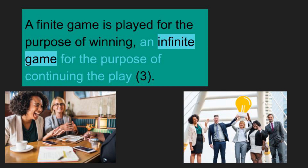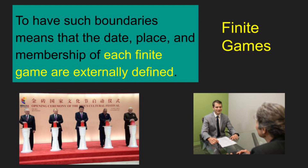Carse goes over several things that make finite and infinite games different. The first is that finite games always have what he calls boundaries. To have such boundaries means that the date, place, and membership of each finite game are externally defined. When you play a sport or a game where the purpose is to win, the rules are already set up in advance. You can change the rules before you play, but you really can't change them during play — especially if all parties don't agree — because that defeats the purpose of playing to win.